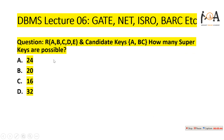Now let's see one more problem. We have a relation with attributes A, B, C, D, E, and the candidate keys are A and BC (both are candidate keys). We need to find how many super keys are possible.